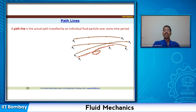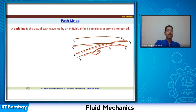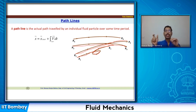Looking at this figure, particle p1 starts from a point and travels a looped path to reach another position — that is the path line for p1. Similarly, p2 starts from one point and follows its own path, and p3 follows another. Path lines can cross each other, form loops, and move in any direction depending on the flow properties.